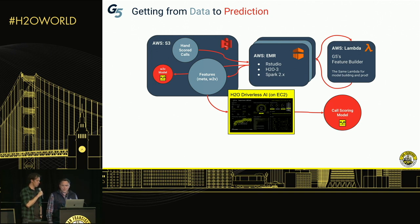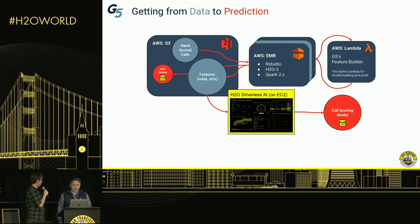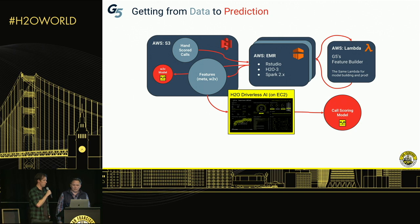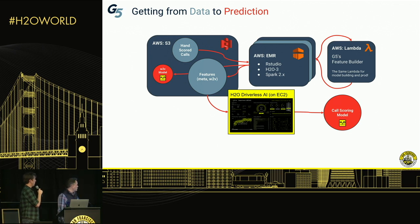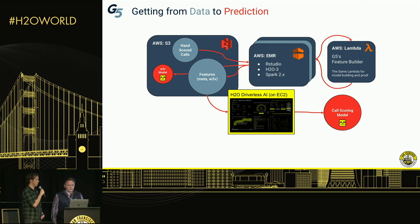As Martin said, we hand scored about 109,000 phone calls. We staged that data up in S3 and spun up an AWS EMR cluster — a large Spark cluster running RStudio and H2O. In our case it was relatively small, just three nodes with a pretty decent amount of memory. We went through, ingested that data, built those Word2Vec models, and then exported those Word2Vec models as POJOs. We exported those and pulled them into AWS Lambda, and then referenced those from EMR. That becomes important later on in productionizing.